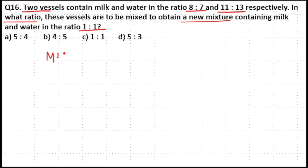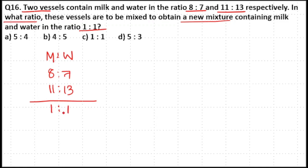Milk and water in the first vessel is in the ratio 8:7. In the second vessel it is in the ratio 11:13. The resultant mixture should be 1:1, but we don't know in what ratio these two vessels should be mixed. We have to find the ratio in which these vessels should be mixed to obtain a new 1:1 ratio.